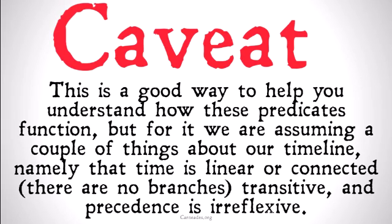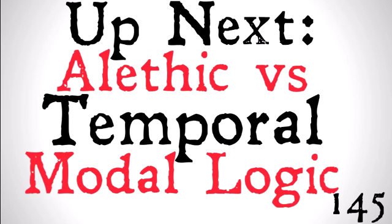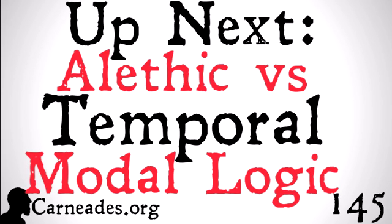This is a good way to help you understand how these predicates function, but we are assuming a couple things about our timeline — namely that it is linear or connected (no branches), that it is transitive, and that precedence is irreflexive. Those relations are going to look very different if any of those things is changed. In the next couple of videos, we're going to look at different properties of time and the ways we can construct these in axiomatic systems to understand what the properties of precedence and time are. But before we get to all that, we're going to do a little comparison between alethic and temporal modal logic. Watch this video and more at carneades.org and watch a new video every single day for the three months of modal logic.